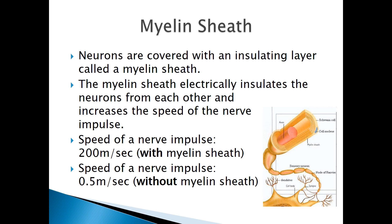The last thing I wanted to talk about in detail is the myelin sheath. As I showed earlier, the myelin sheath is a layer of insulation around the axon of the neuron. It insulates neurons from each other and increases the speed of the nerve impulse. To put that into perspective, the speed of a nerve impulse in a neuron with a myelin sheath is 200 meters per second, whereas without the myelin sheath it is only half a meter per second.